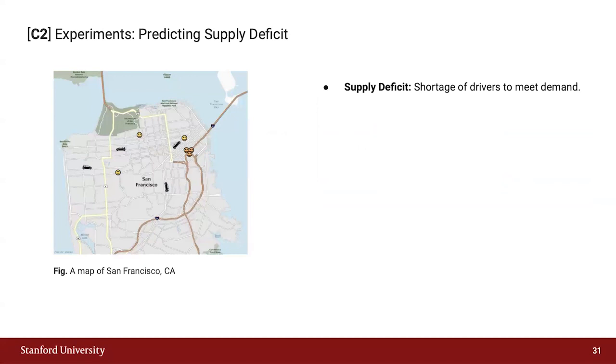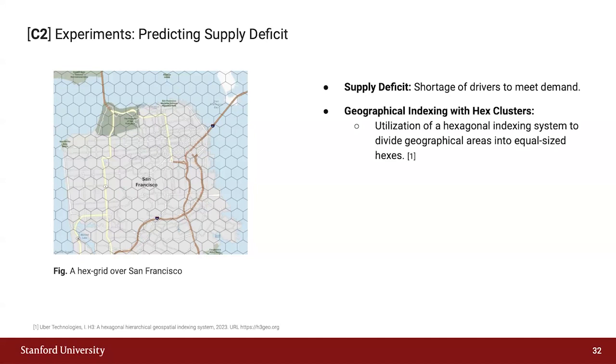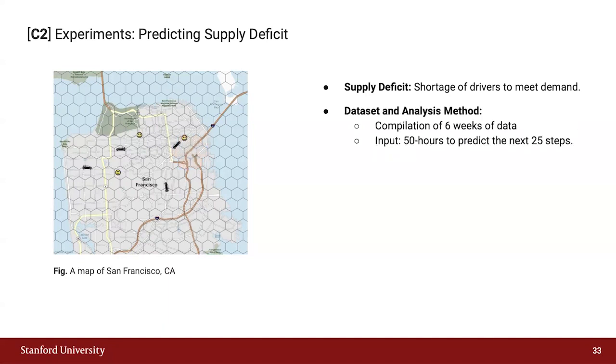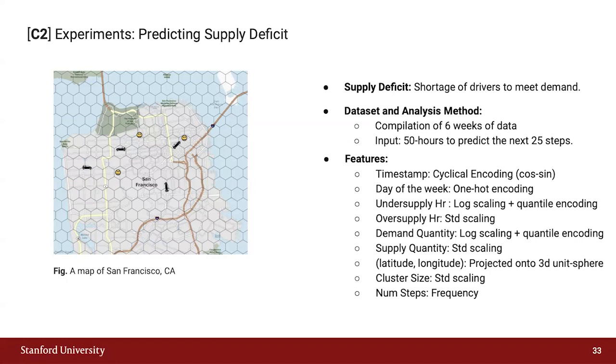The first experiments to test our two architectures is a proprietary dataset by Uber from an internship over the summer. The task at hand is to predict the additional driver hours needed in different locations throughout the city. We apply a hex grid and split the city into area clusters for which we're then predicting supply deficit. The dataset compiles six weeks worth of data, about a million data points. The input to the model is 50 hours, and then we predict the next 24-25 hours or time steps.